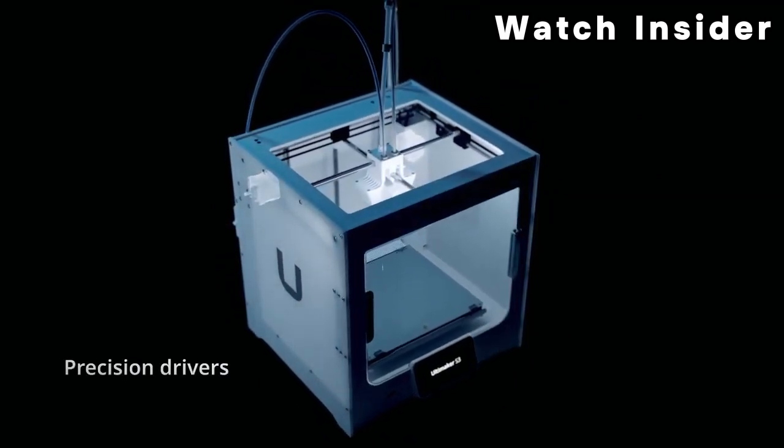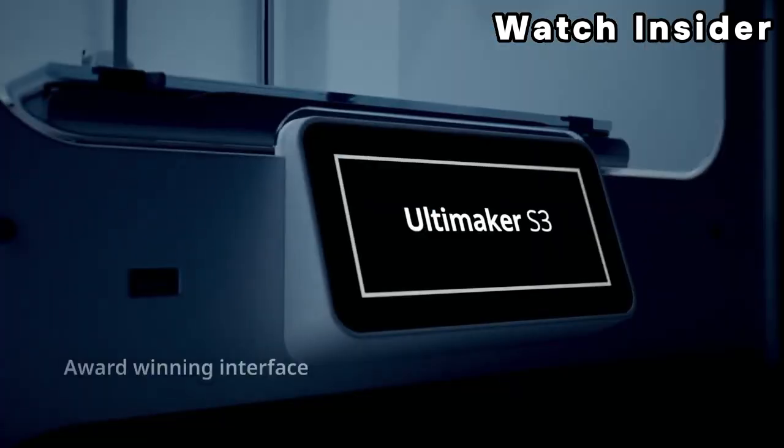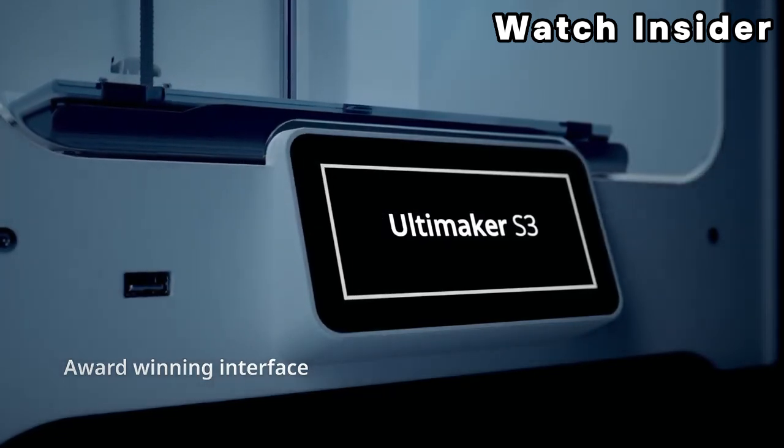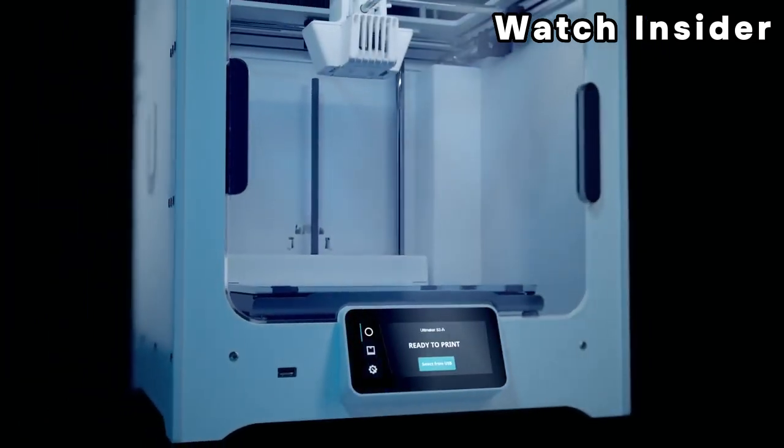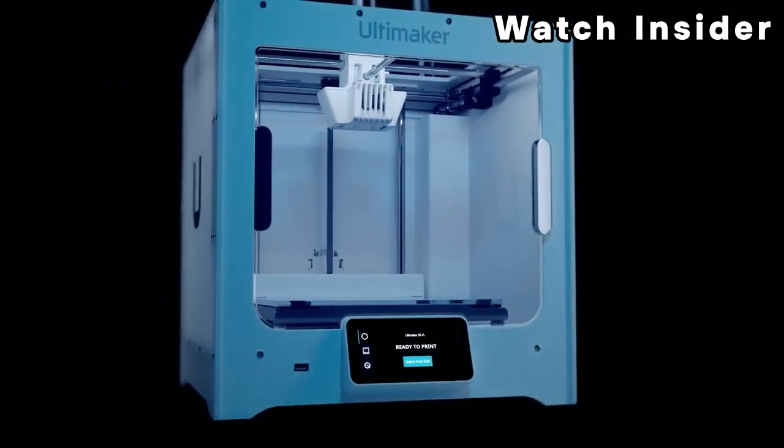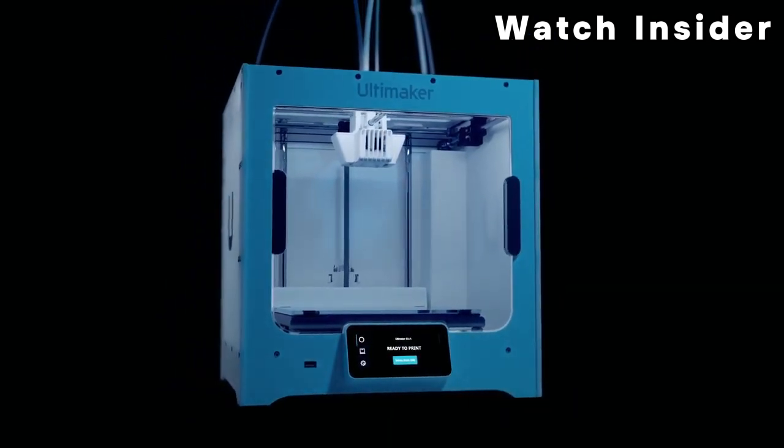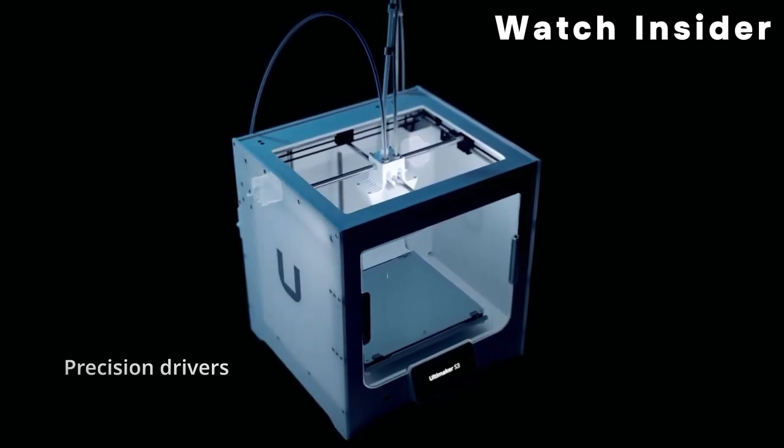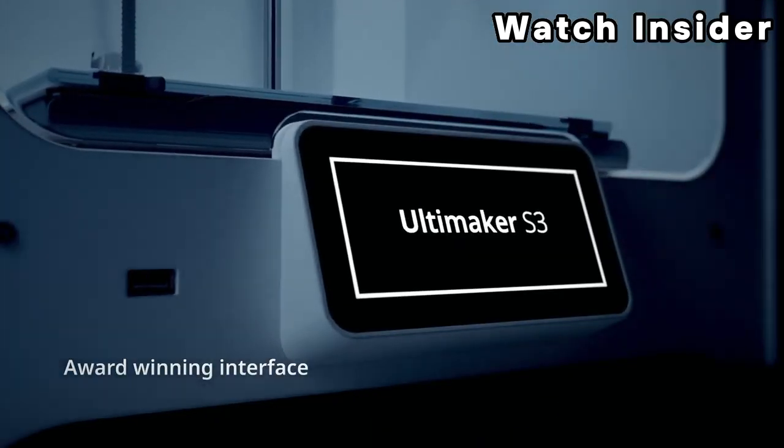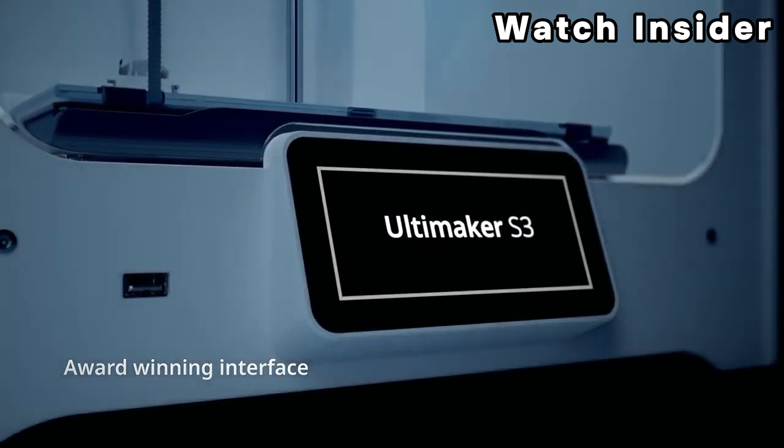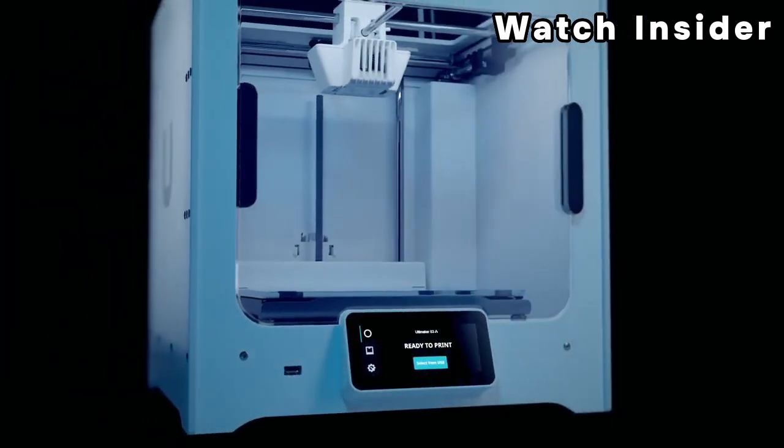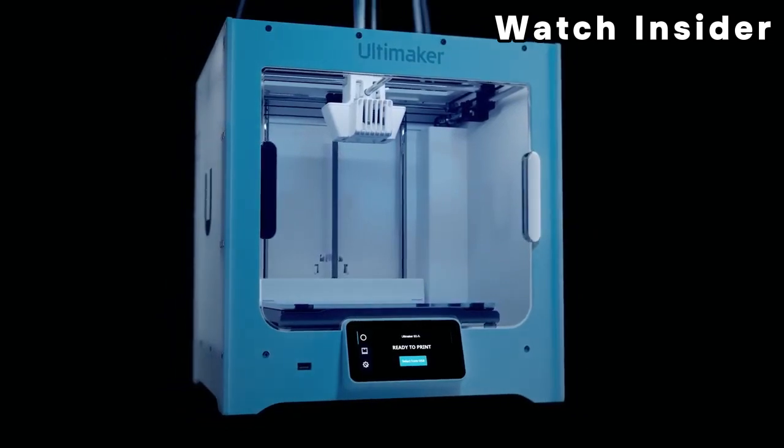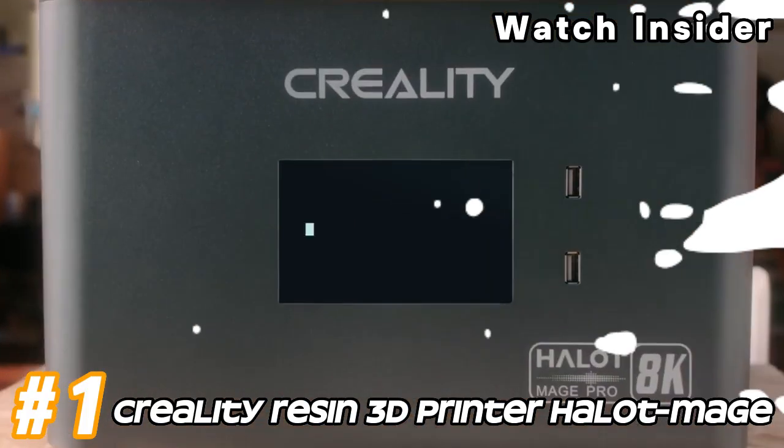The printer is equipped with swappable print cores, which are designed for easy maintenance and material versatility. Users can quickly swap between different nozzle sizes or materials without the need for complex recalibration. The Ultimaker S3 features automatic bed leveling, ensuring that the build platform is properly leveled before each print job. This helps achieve consistent and reliable adhesion, especially for large prints or prints with tight tolerances. The printer boasts an enclosed build chamber, which helps maintain stable temperatures during printing, reducing the risk of warping and improving print quality, particularly for materials like ABS.